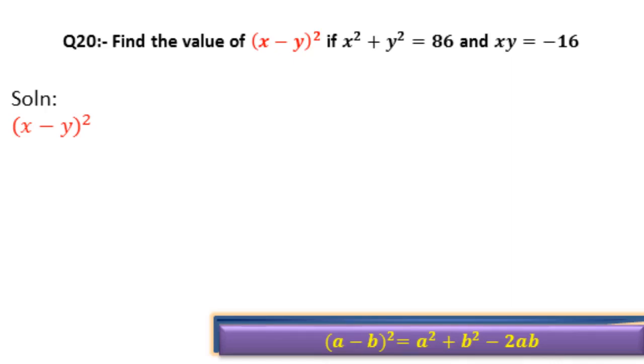As we have to find (x - y)², we will apply the formula which is given below. The formula is (a - b)² = a² + b² - 2ab. Here in our case, a is x and b is y.